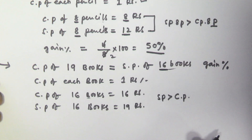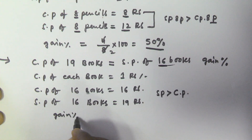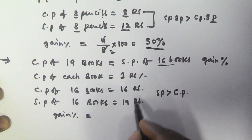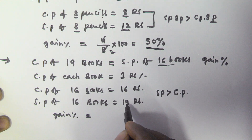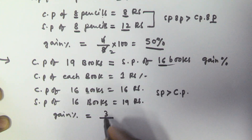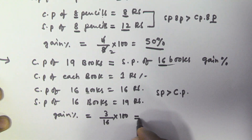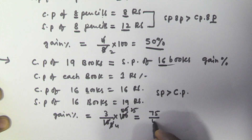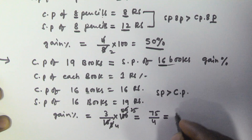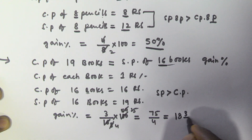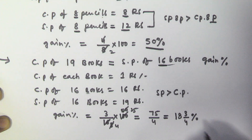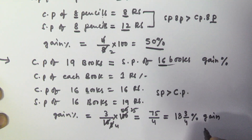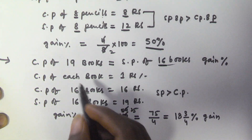So the gain percentage is calculated by: gain divided by cost price into 100. For 16 rupees he is selling for 19, so the gain is 19 minus 16 = 3. Therefore gain percentage = 3 by 16 into 100 = 300 by 16 = 75 by 4 = 18 and 3 by 4 percent gain.